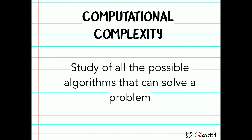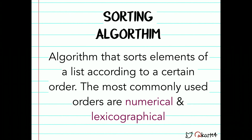So computational complexity — what is that even? Computational complexity is just the study of all the possible algorithms that can solve a problem. So far, so good. But this is a sorting talk. So what is a sorting algorithm? A sorting algorithm is just an algorithm that sorts elements of a list according to a certain order. I imagine you already knew that.